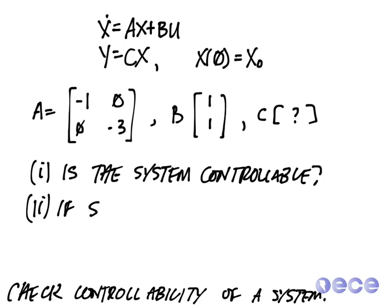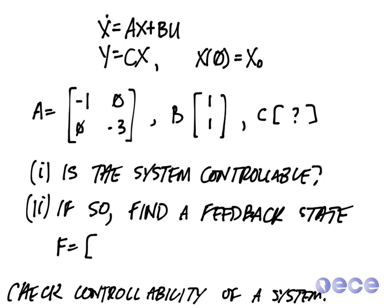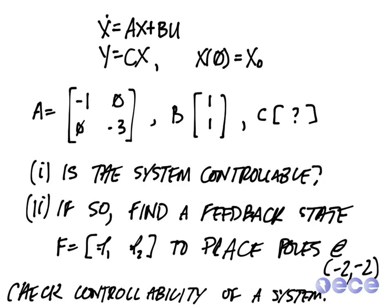And if it is controllable, I would like to find a feedback state controller, F, which is equal to f1, f2, to place the poles at a specific location. So I'd like to place the poles at minus 2 and minus 2. So I'm going to have two poles. I want them both to be in the same place. So with the system defined in this way, let's go through the process of checking controllability. And then if it's controllable, then we'll go ahead and define the controller F.